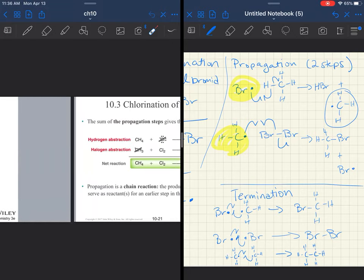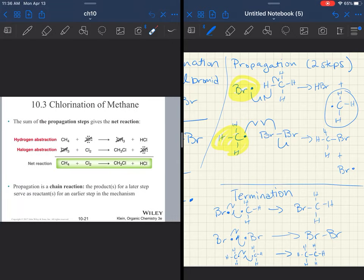So I may ask you to just show one termination step. I may ask you to show two or three in this instance. But it's just a combination of radicals that are made during that initiation and propagation.